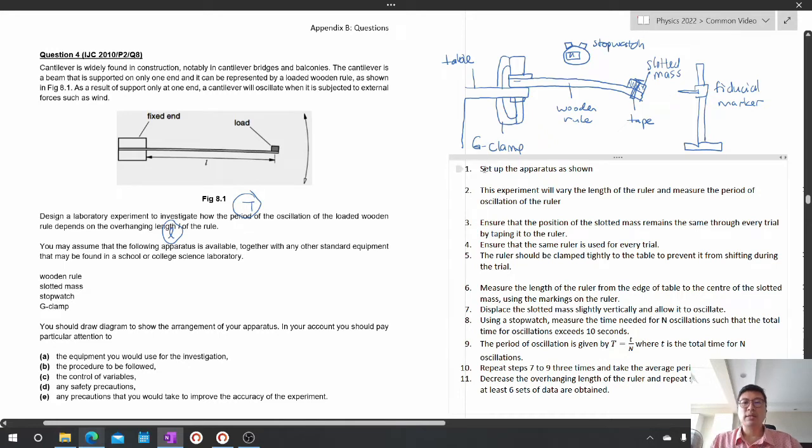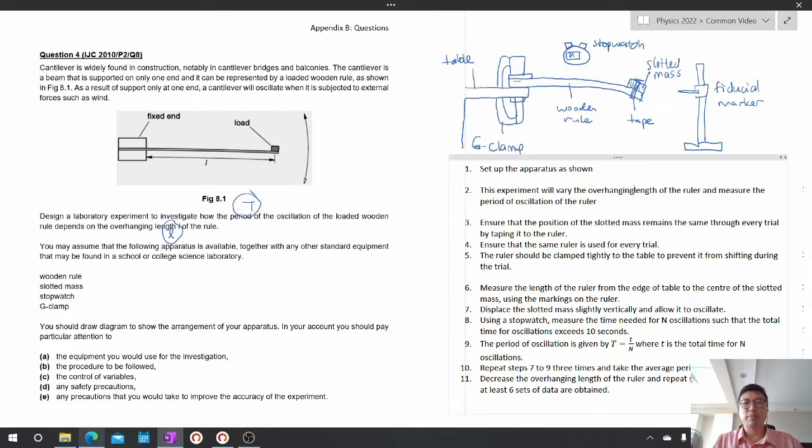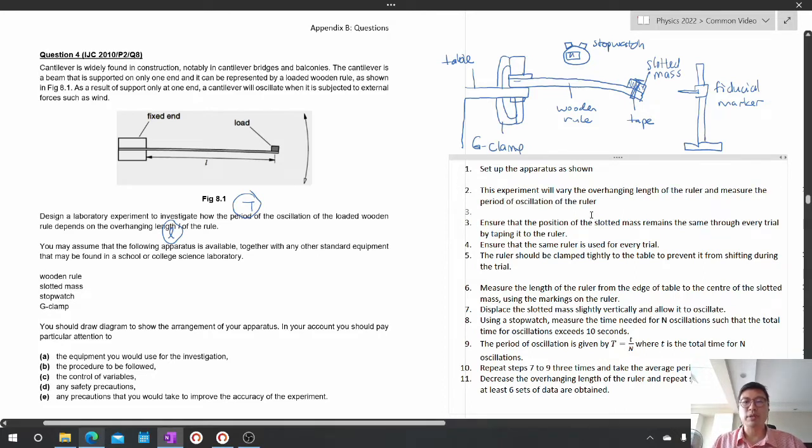Now let us begin the standard. It's quite nice to always start with the same line so that at least we know how to get started. Set up the apparatus as shown. The basic procedure is the experiment: we'll vary the overhanging length of the ruler and then measure the period of oscillation of the ruler.